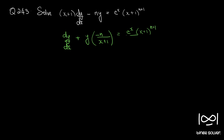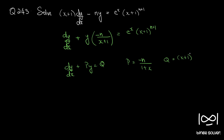This is in the standard form of a linear equation: dy/dx plus Py equals Q, where P and Q are functions of x alone. Here P equals minus n by (1+x) and Q equals (x+1)^(n+1) into e^x.